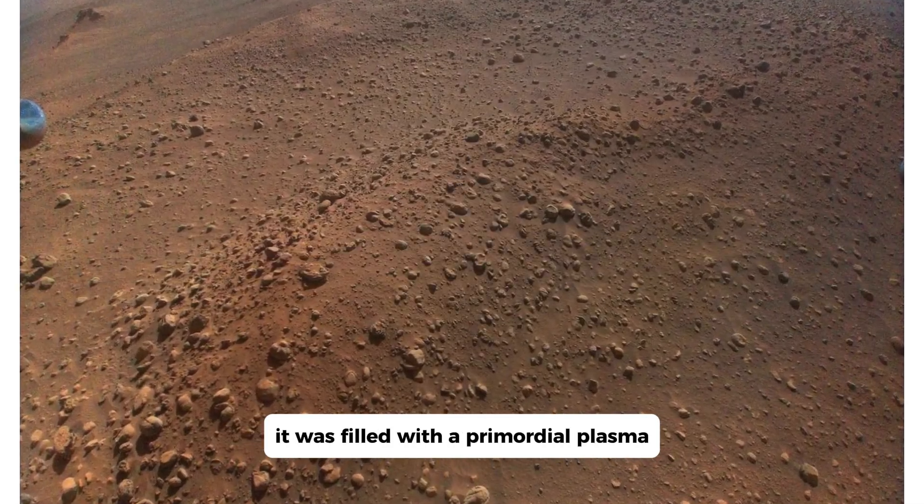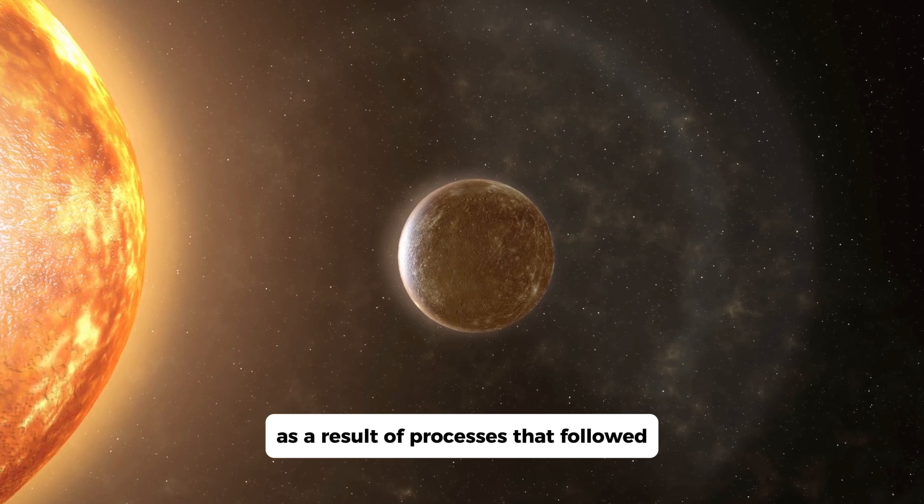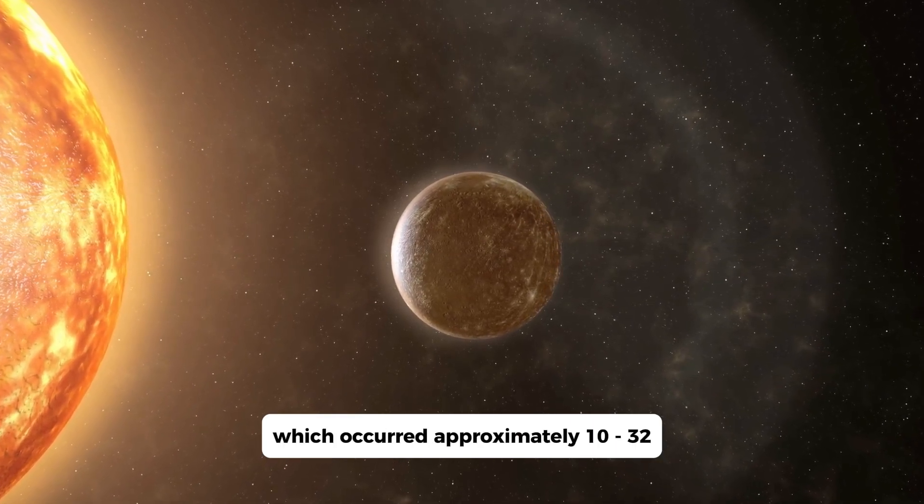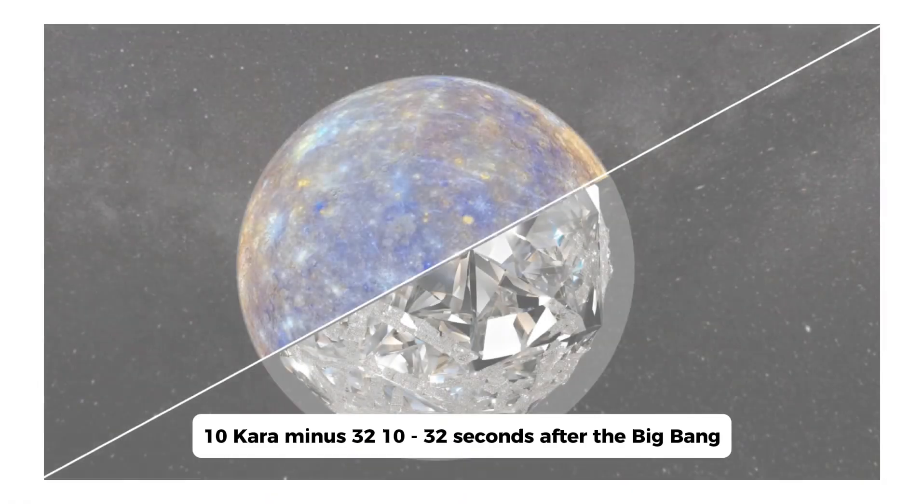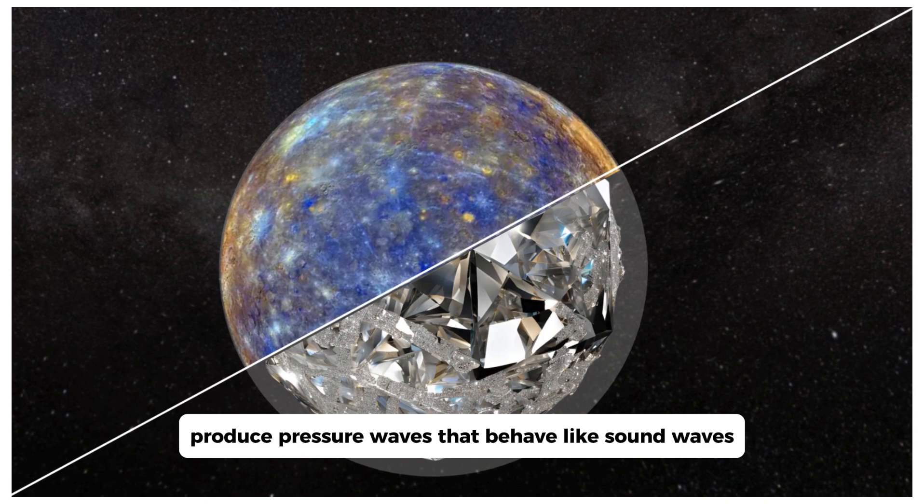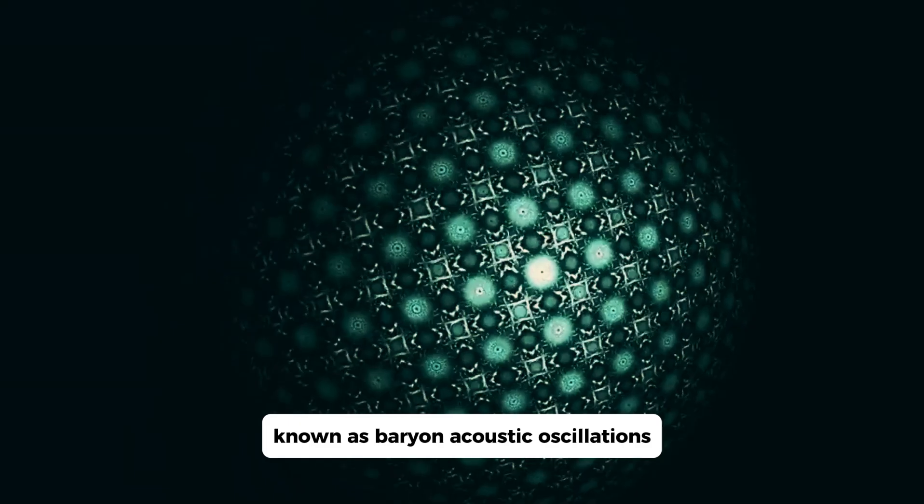In the early universe, shortly after the Big Bang, it was filled with a primordial plasma. This plasma began to clump together as a result of processes that followed the inflationary epoch, which occurred approximately 10^-32 seconds after the Big Bang. The clumping of matter produced pressure waves that behaved like sound waves, known as baryon acoustic oscillations.